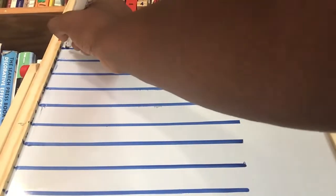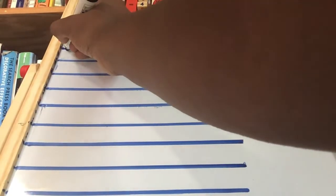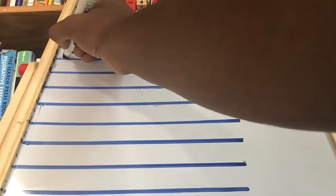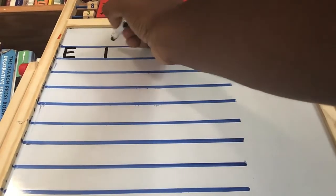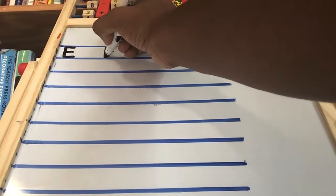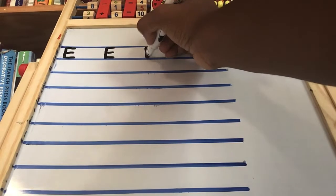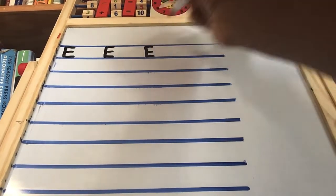So capital E - pretend this is your page. We're coming at the top, come down, across, across, across. That's one, two, three, four.